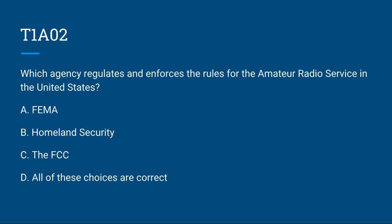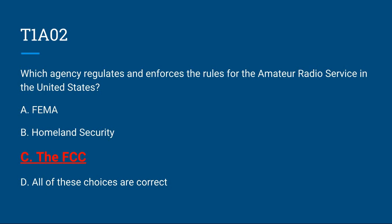T1A02: Which agency regulates and enforces the rules for the amateur radio service in the United States? A, FEMA; B, Homeland Security; C, the FCC; or D, all of these choices are correct. The correct answer is C, the FCC.